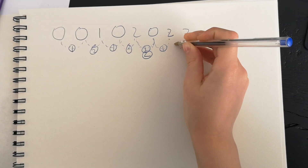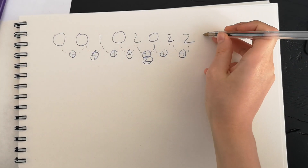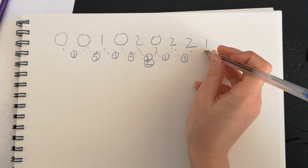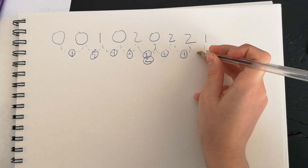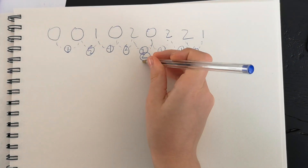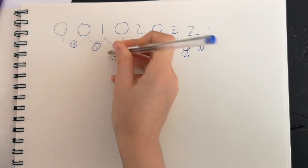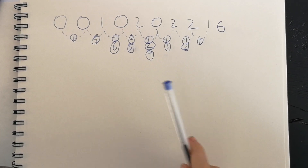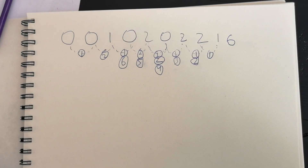Have we seen two before? Yes, we've seen it one step ago, so the next term is one. Now we see the one — have we seen a one before? Yes, we've seen it one, two, three, four, five, six steps ago, so the next number is six. So it's small for a while: zero, zero, one, zero, two, zero, two, two, one — and that's only six terms in.